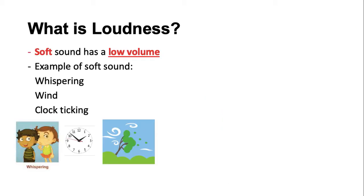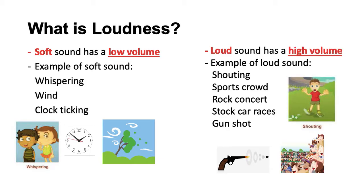A soft sound has a low volume. Examples of soft sounds are whispering, wind, and clock ticking. A loud sound has a high volume. Examples of loud sounds are shouting, sport crowd, rock concert, stock car races, and a gunshot.